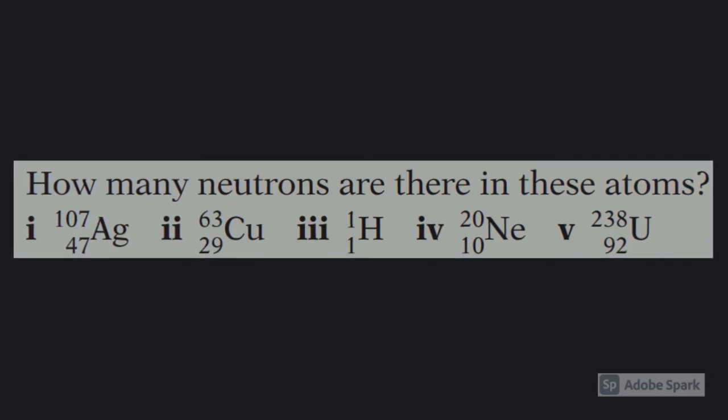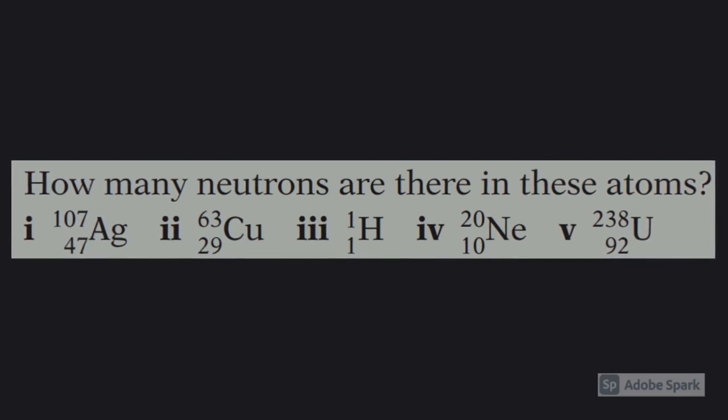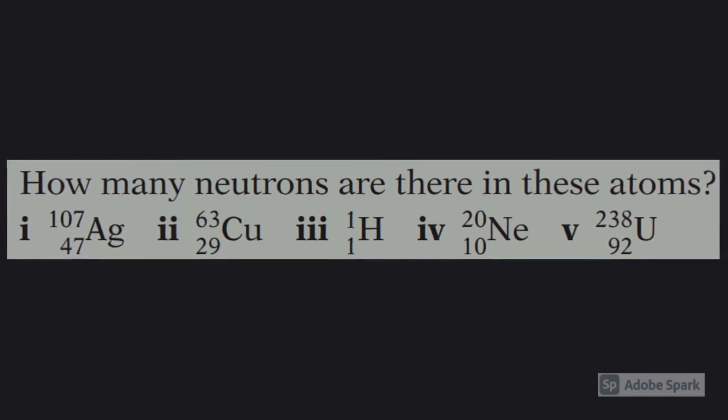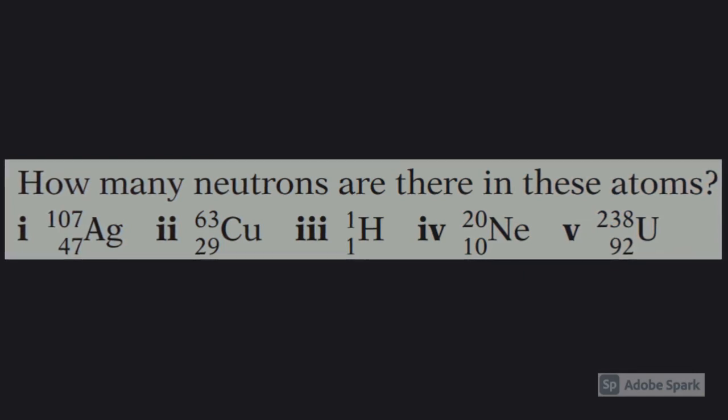So the answers are for silver-107, there are 60 neutrons. For copper-63, there are 34. For hydrogen-1, there are no neutrons. For neon-20, there are 10 neutrons. And finally, for uranium-238, there are 146.